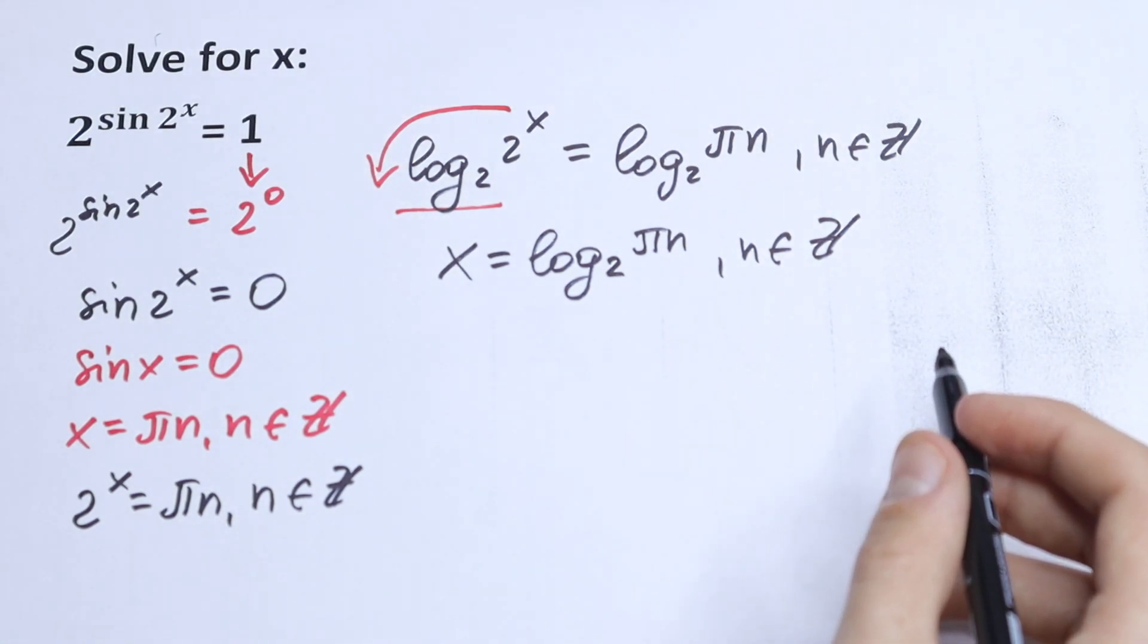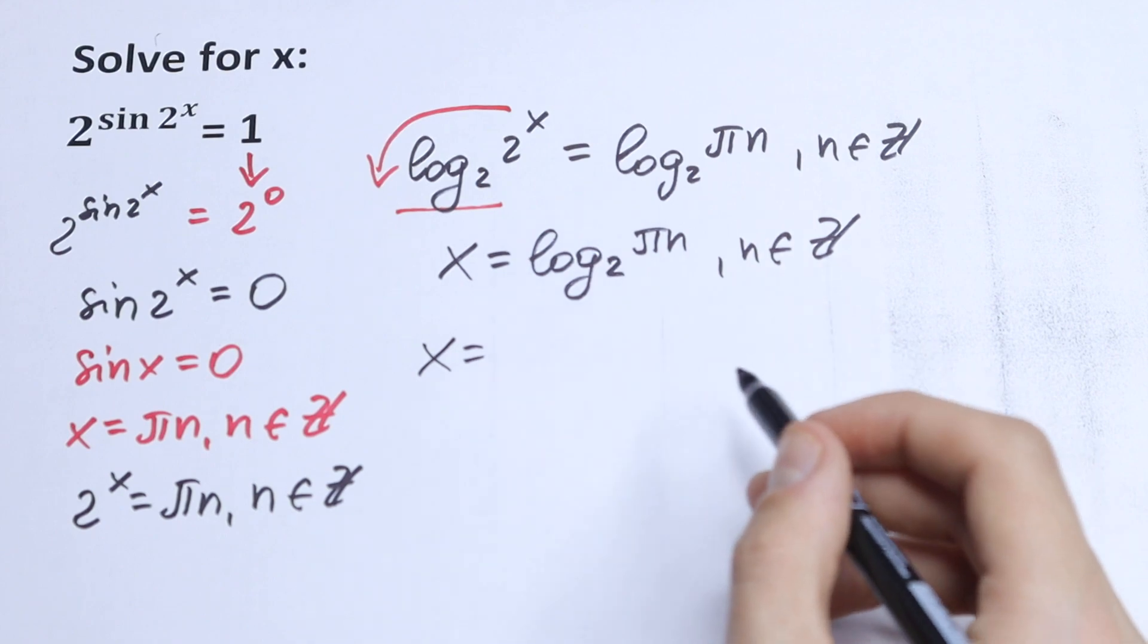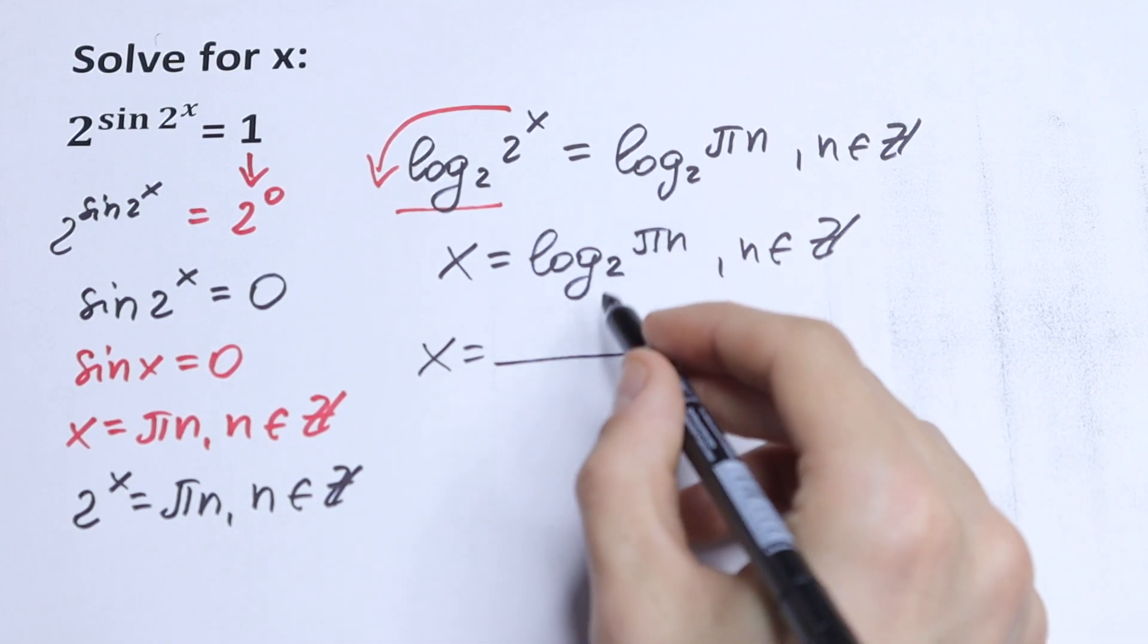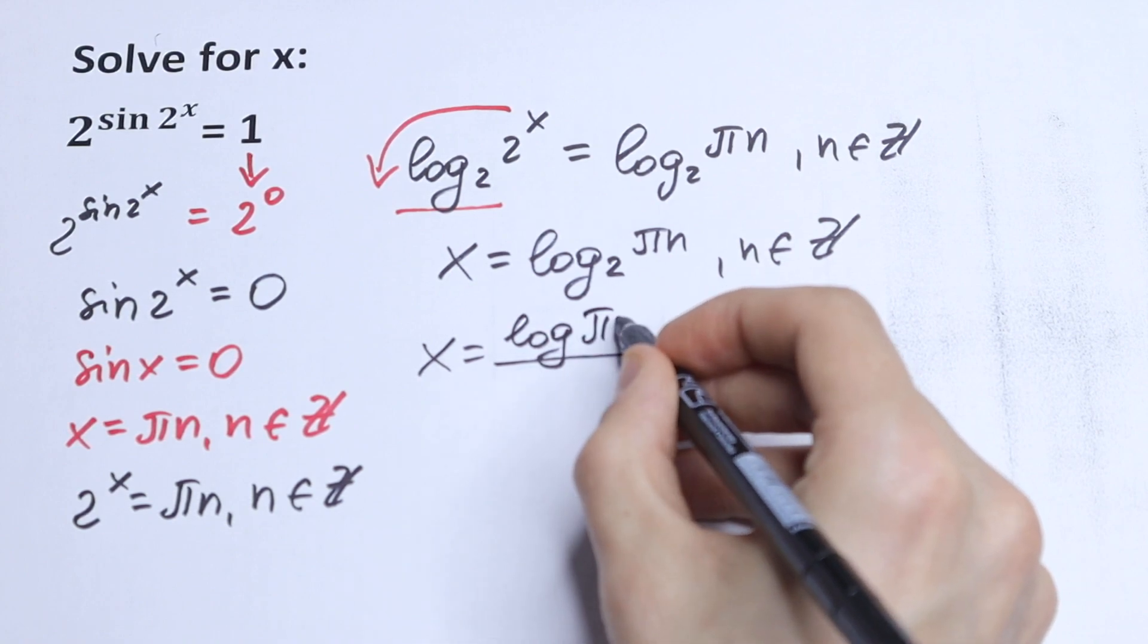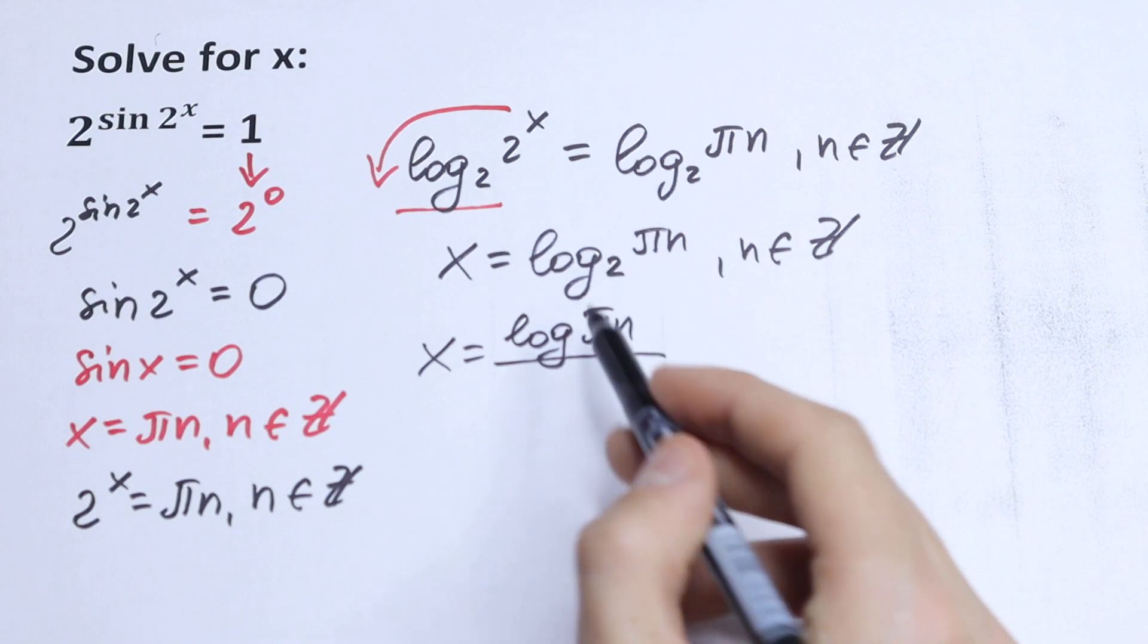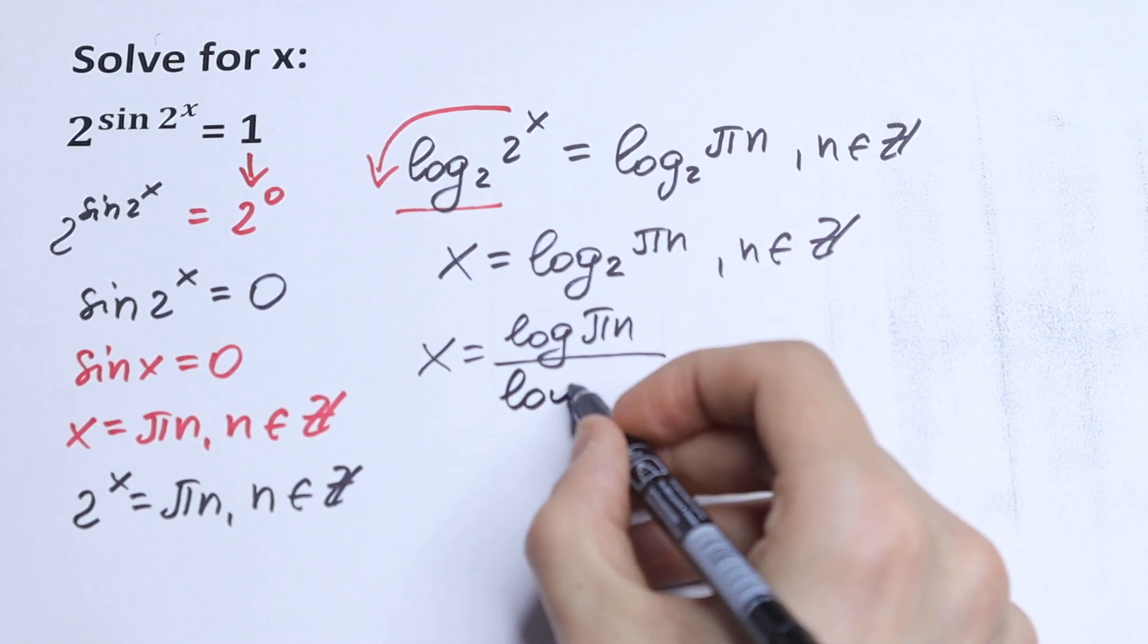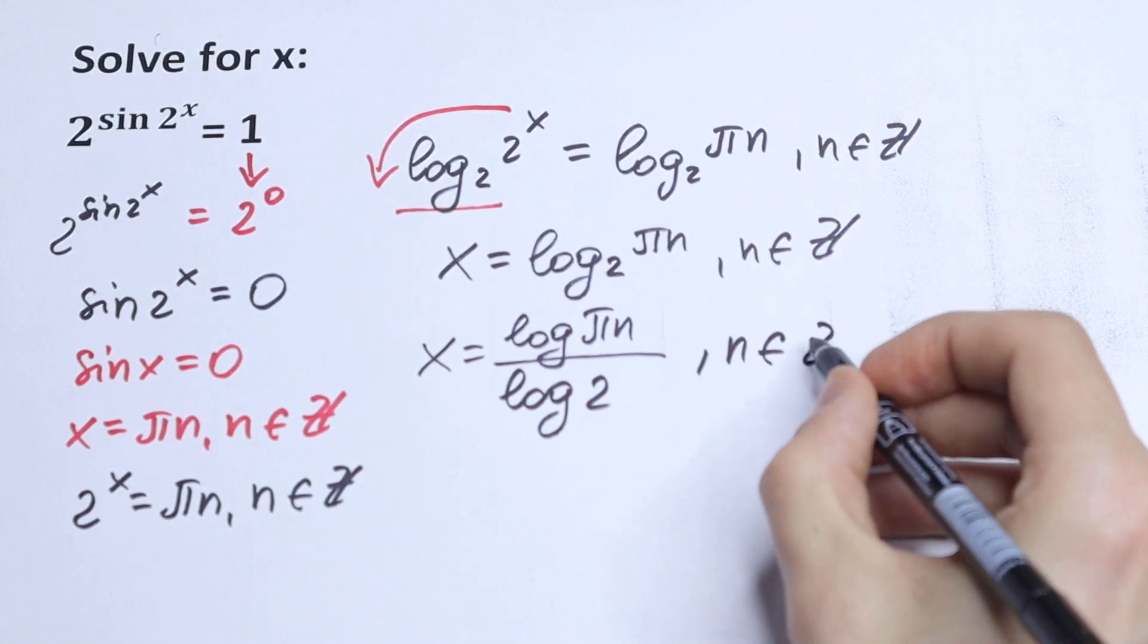And of course, we can simplify this a little bit. We can write this answer using a log property. We can write that log base 2 of πn will be equal to log πn divided by log 2, n is ℤ.